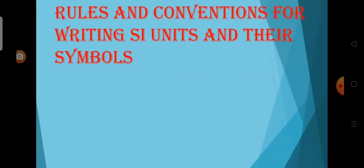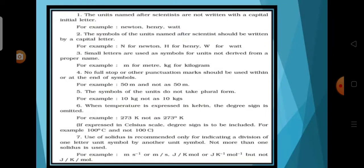Now we will see about the rules and conventions for writing SI units and their symbols. The units named after scientists are not written with a capital letter. For example, newton, henry, ampere, and watt should be written in small letters only.